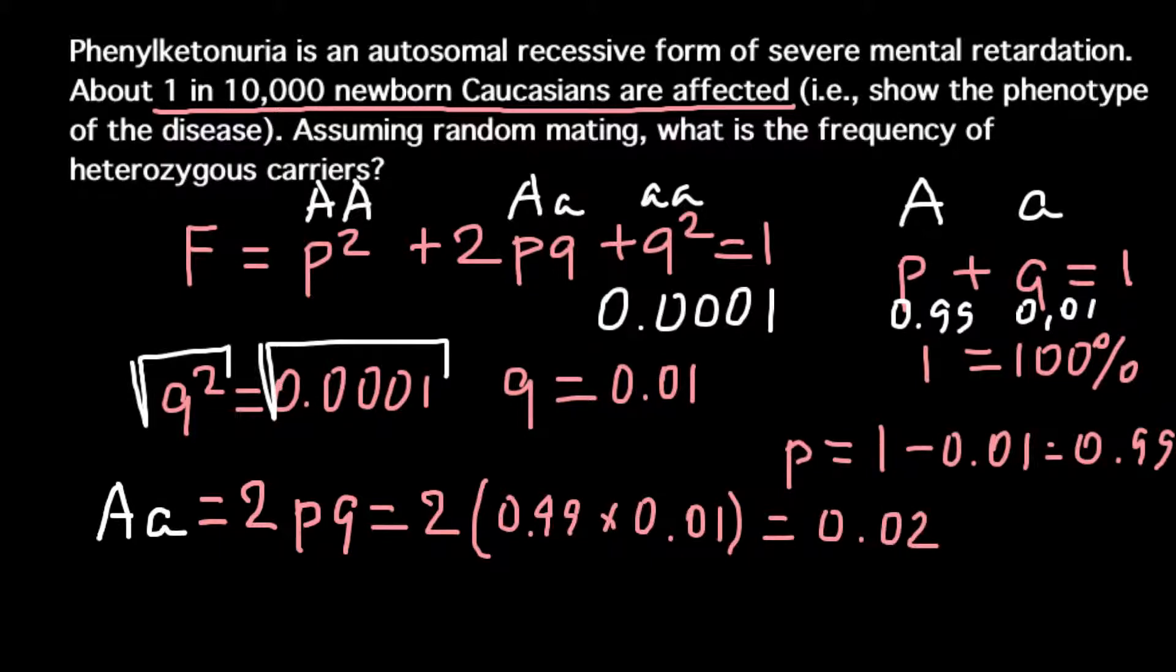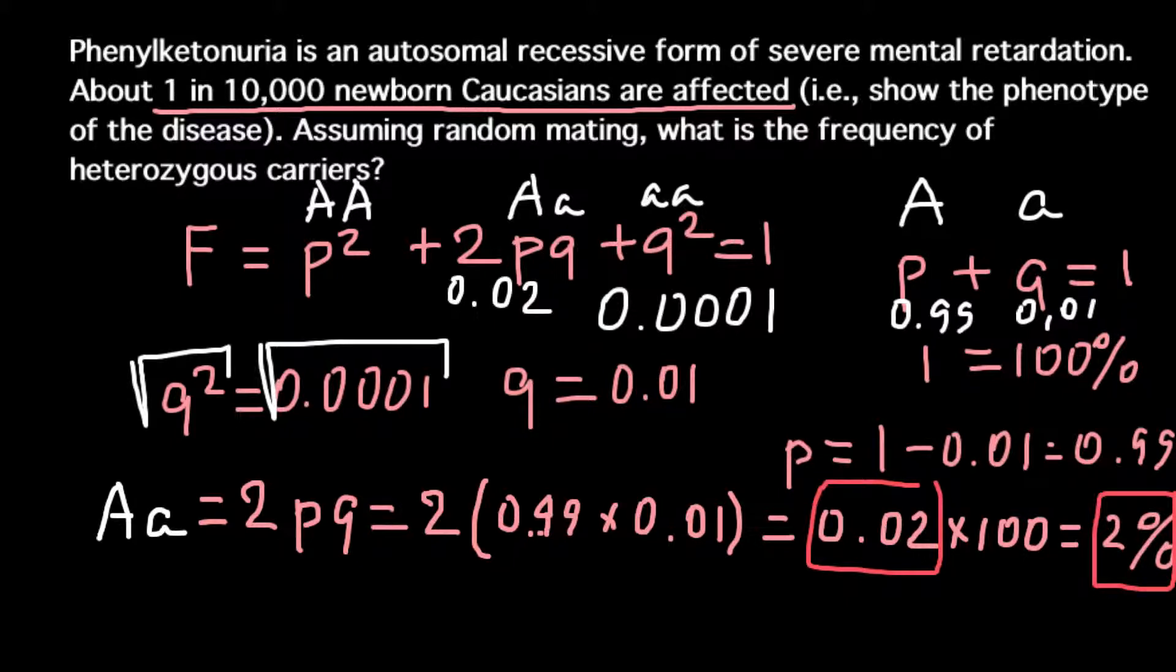Of course I'm rounding all the numbers to two decimal places. So we also can give an answer as a percentage. We just have to multiply this number by 100. And the answer would be 2 percent. So this is going to be our answer today, 0.02. You can use whether this number on the scale between 0 and 1 or this number in percentage form.